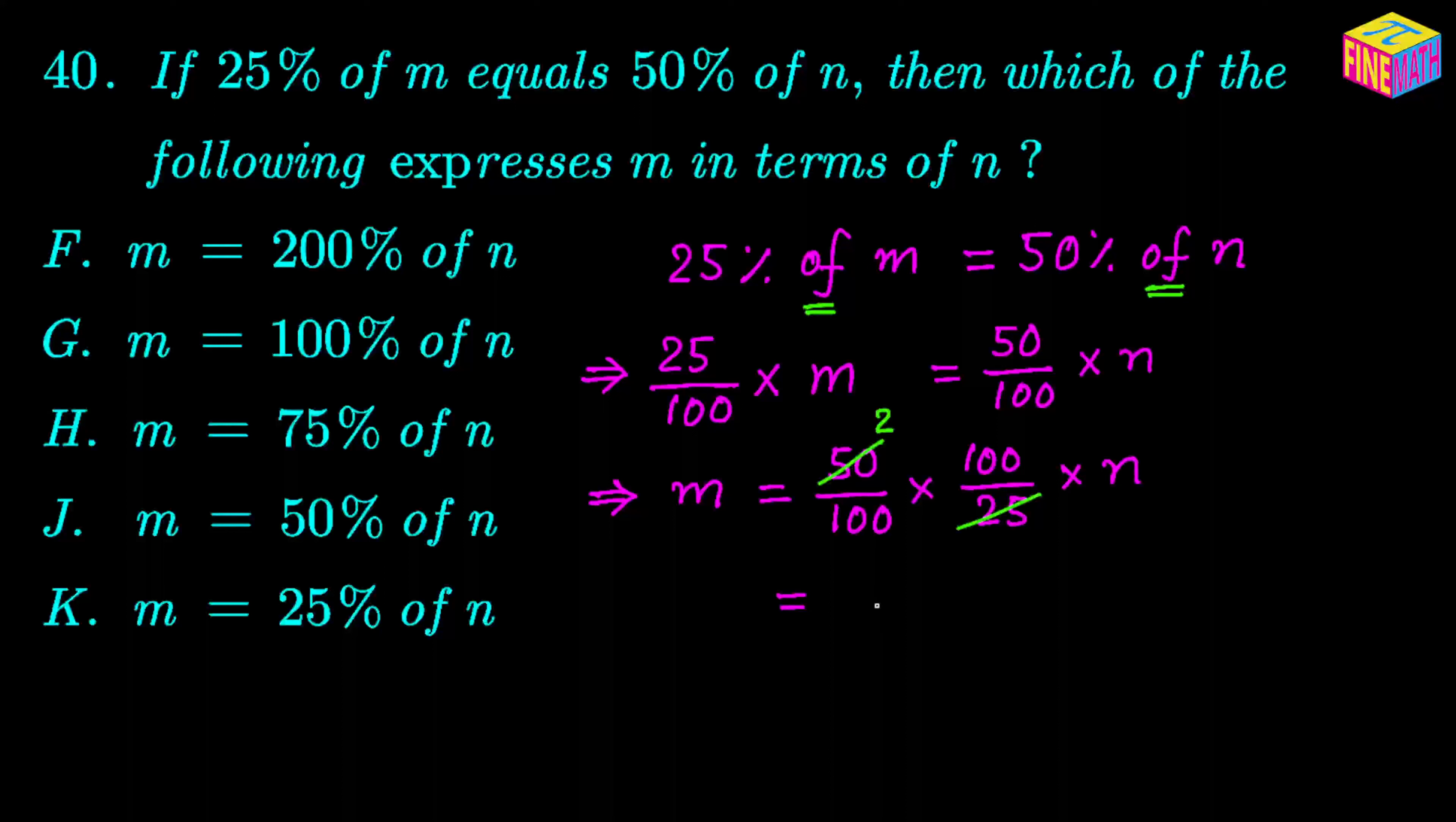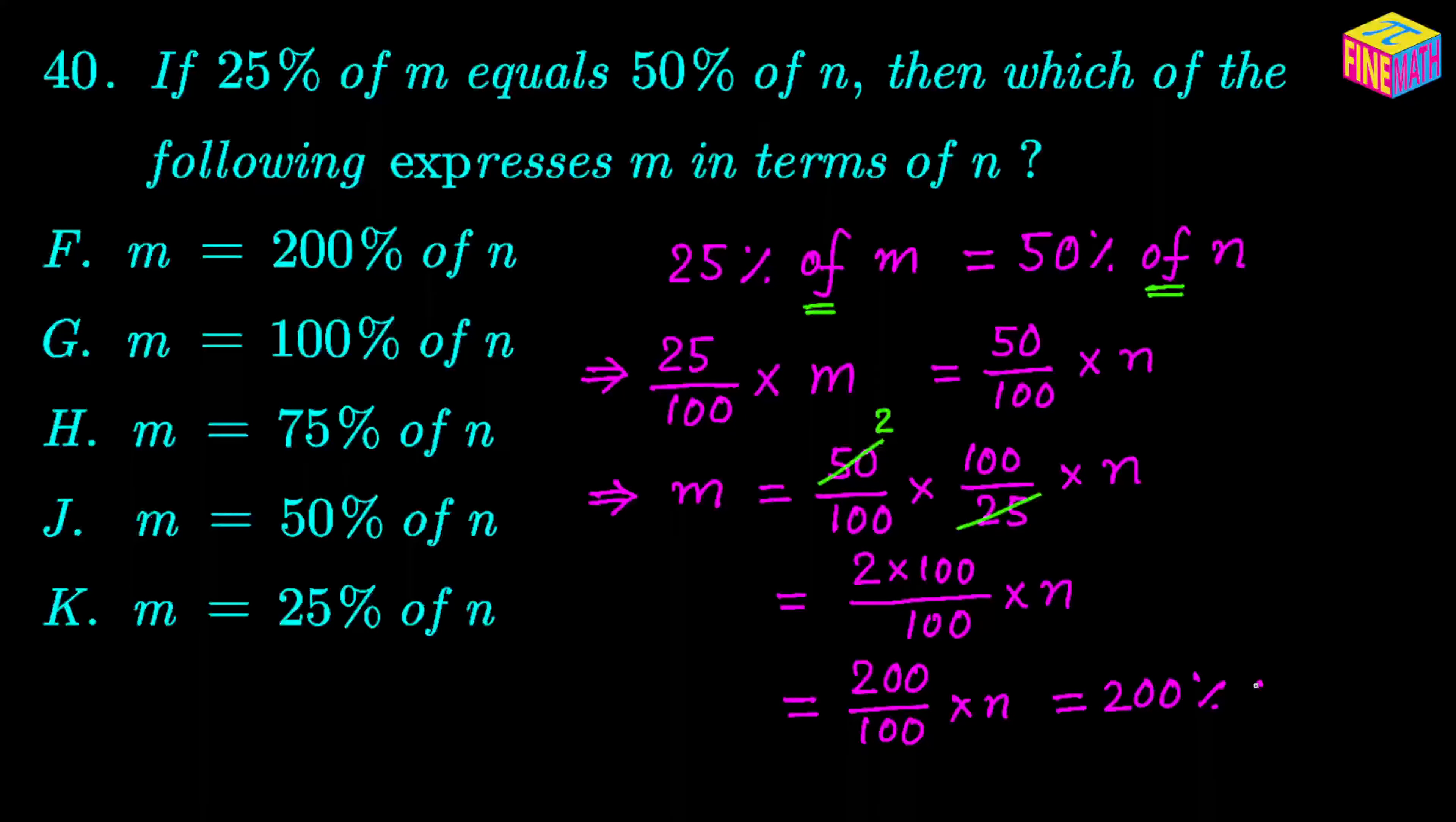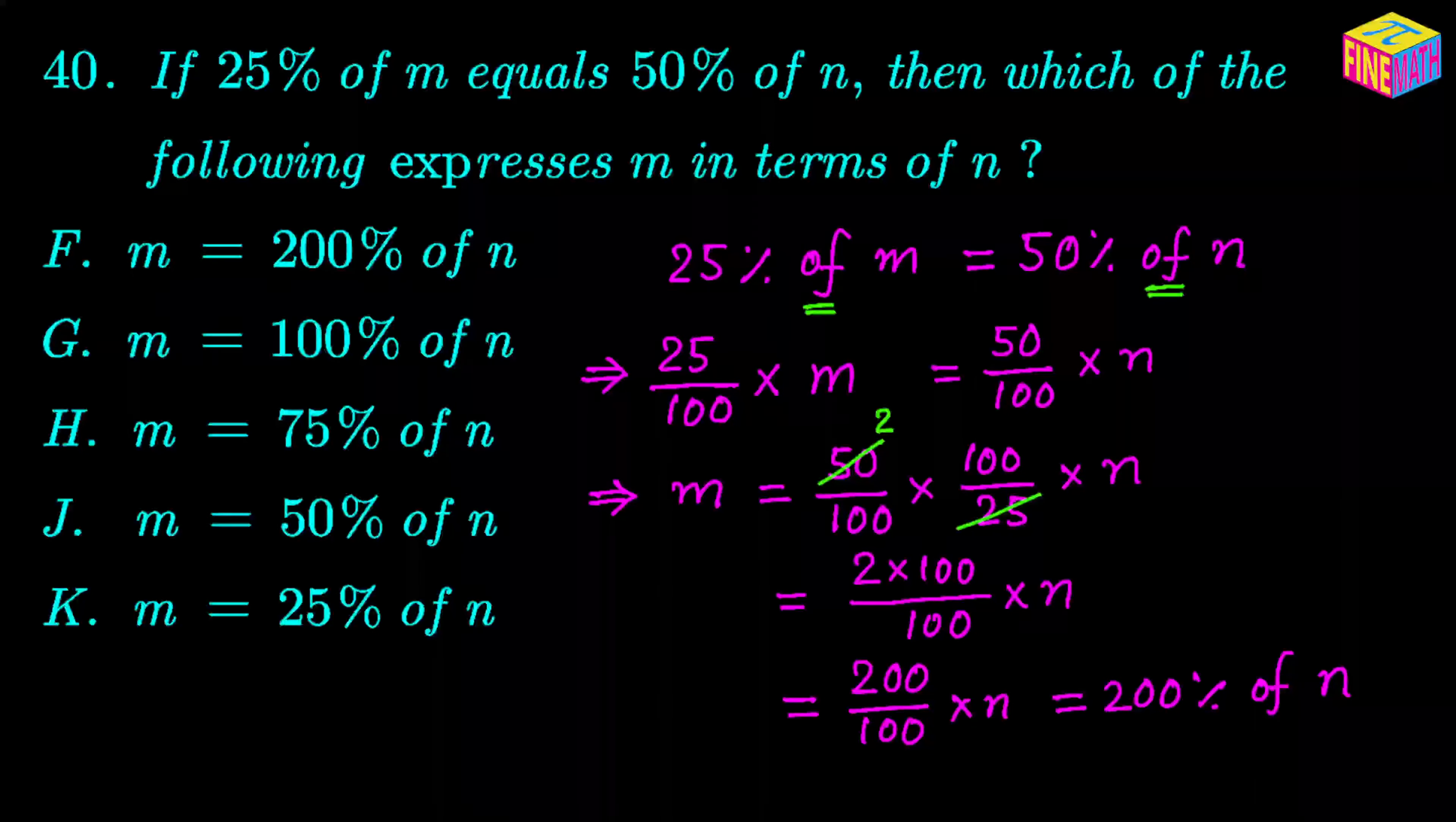So then we can write it like this. We can say, then we have 2 times 100 in the numerator, and then in the denominator we have 100 times n, and that can be written as 200 over 100 times n, and that can be written as 200 percent of n. And we have already arrived at our answer.